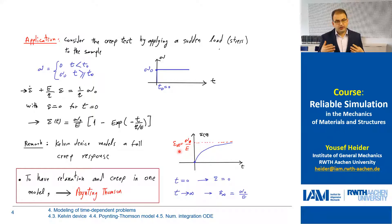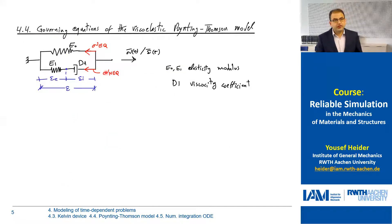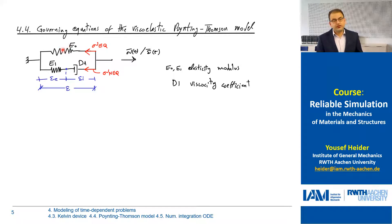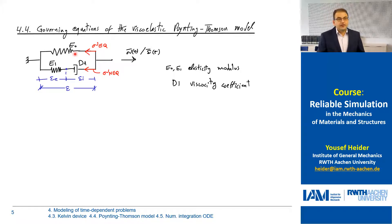Now we have another model, which is the Poynting-Thompson model. It's more advanced, and it is capable of describing both the relaxation and the creep material response. Let's talk about the governing equations of the viscoelastic Poynting-Thompson model. It consists of two branches: we have the elastic branch with spring stiffness E zero, and then we have a non-equilibrium branch which has a spring and a dashpot. The material parameters come from the experimental data depending on the material being considered.